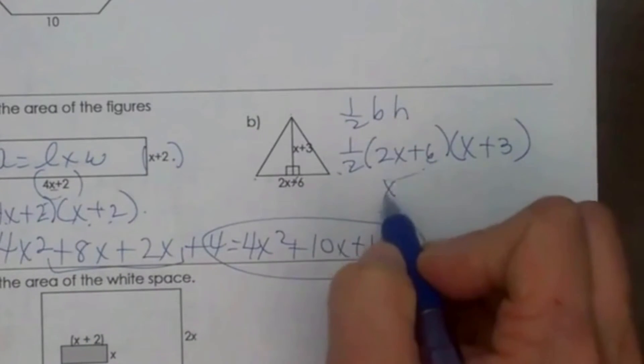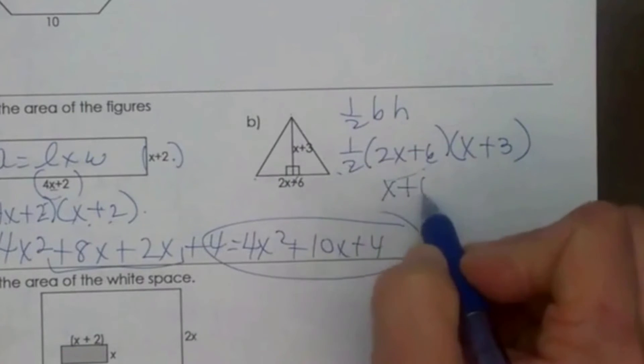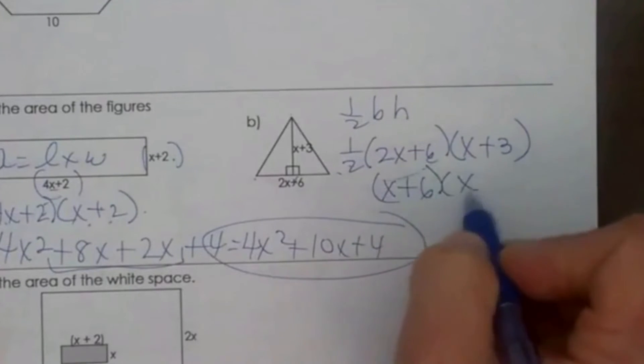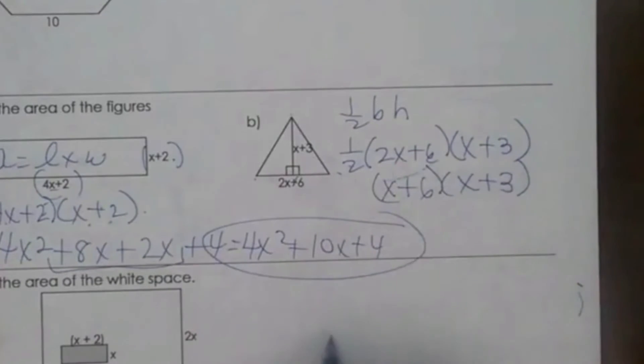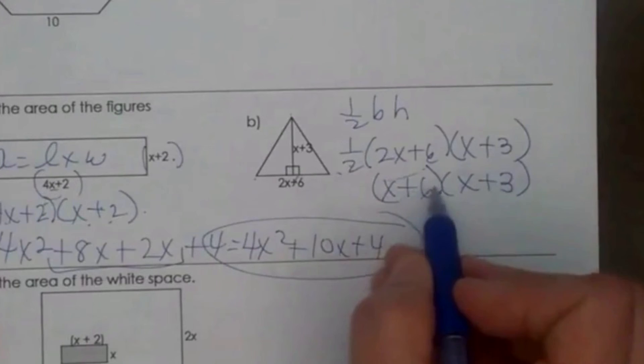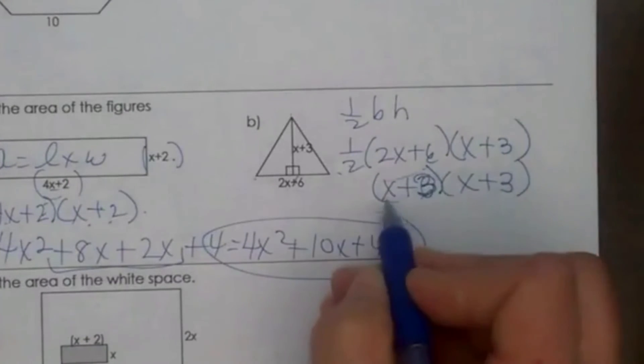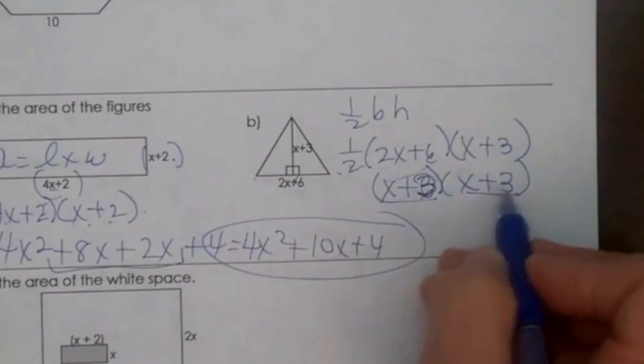Half of 2 is 1, half of 6 is 3. You only take half of one of them, you don't take half of both of them. Then I end up with x plus 3 times x plus 3.